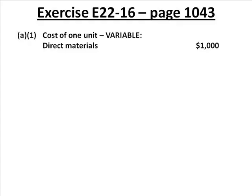Direct materials for $1,000 — which is a variable cost we established in Monday's lecture. Jeff, name another cost that should be included. Direct labor of $1,500 should be included here. Are you with Jeff and me? Keep going, Jeff. Variable manufacturing overhead was $300.